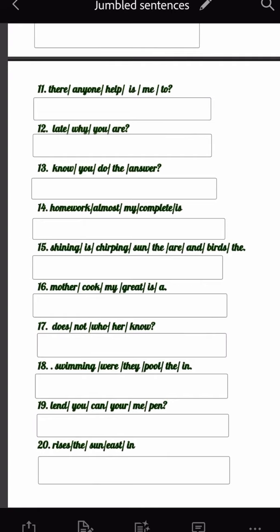Shining, is, chirping, sun, the, birds, are, and. The birds are chirping and the sun is shining. Birds chirp kar rahi hai, matlab birds awaazein nikal rahi hai, cheechee choochoo jo karti hai, woh kar rahi hai. Aur jo sun hai, woh shine kar raha hai, chamak raha hai. Mother, cook, my, great, is, a. My mother is a great cook.